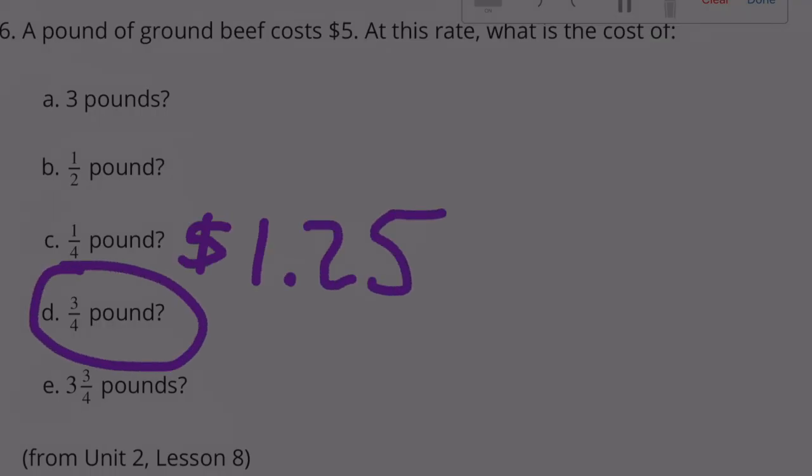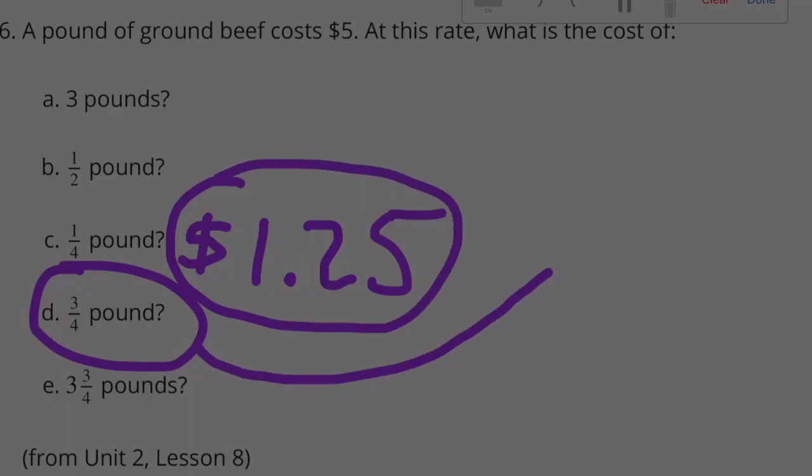$3.75. Three fourths of a pound. Well, that's going to be three times greater than 1/4 of a pound. So $1.25 times 3 is going to be $3.75.